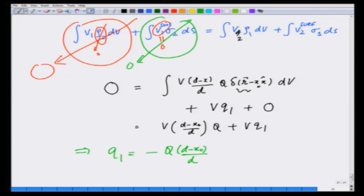If I look at this capacitor again, this distance was x 0, and then the charge density or q 1 on this is equal to nothing but q times the distance from the other plate divided by d with a minus sign.